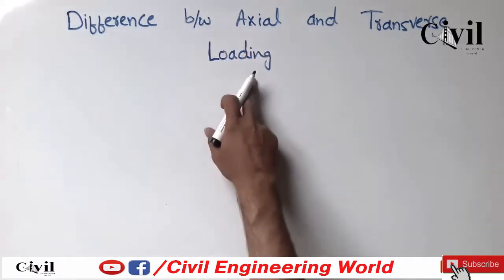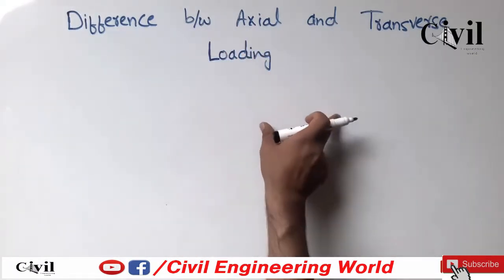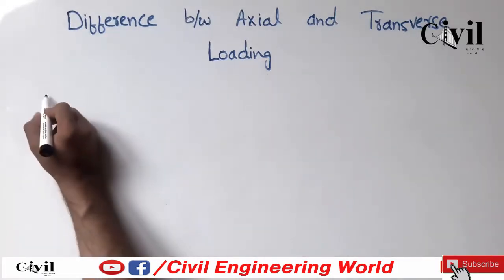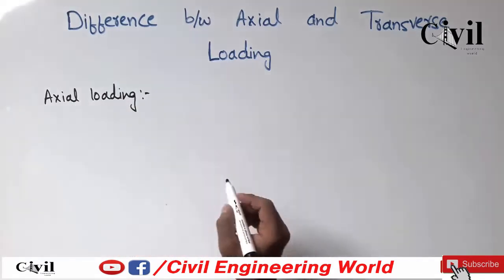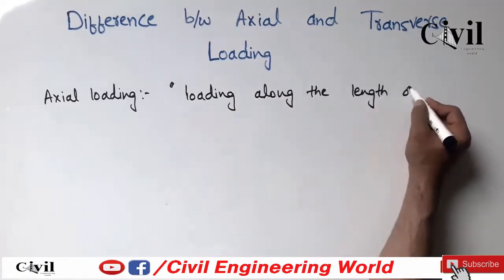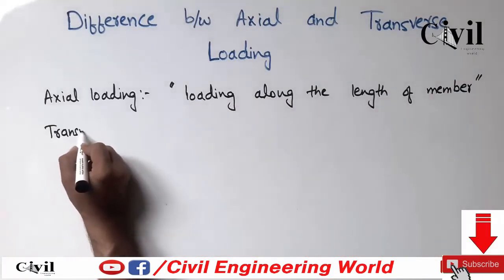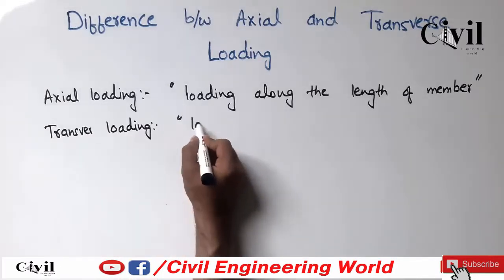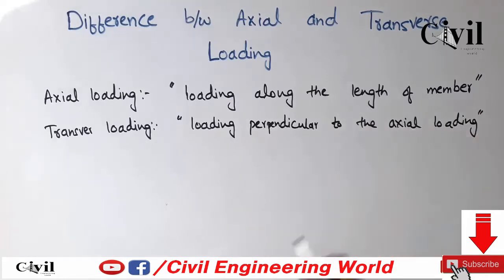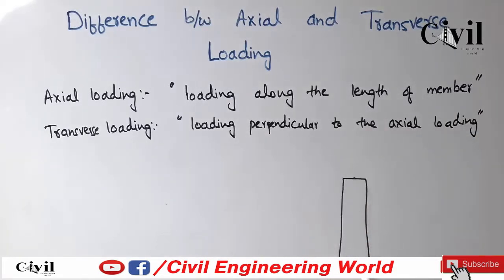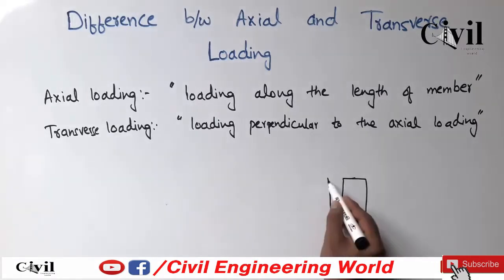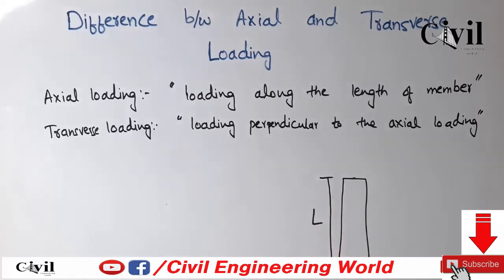There are various positions of loads on structural members that we must differentiate. The axial loads are those that act on a member along its length. Transverse loading is the type of loading which acts on a member perpendicular to the axial loading. Consider a vertical member having the length L — in axial loading, the load acts along the axis of the member.